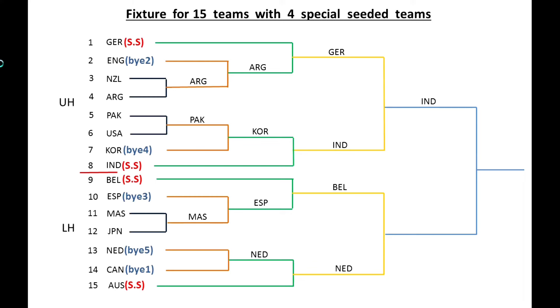In the semi-finals, Germany versus India — India has won. Belgium versus Netherlands — Netherlands has won. In the final match, Netherlands versus India — India has won the match.